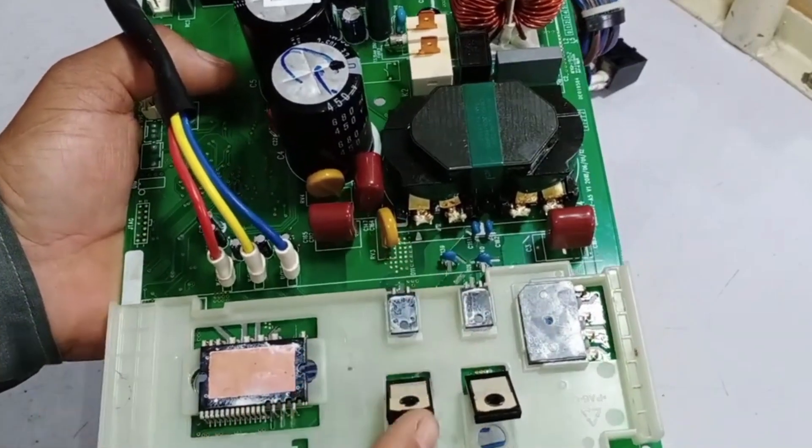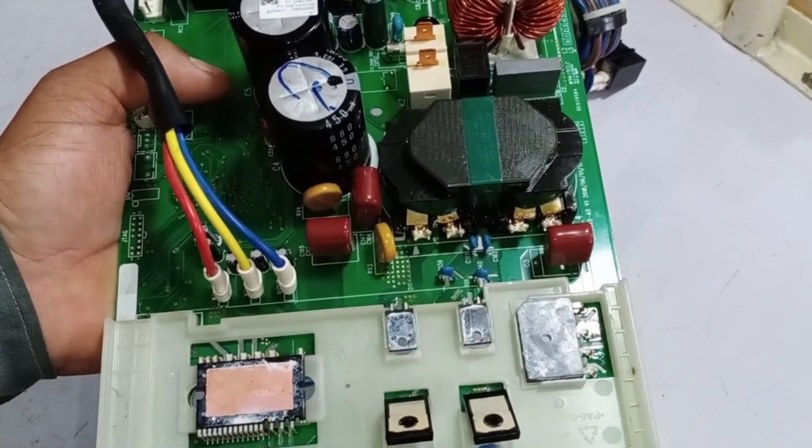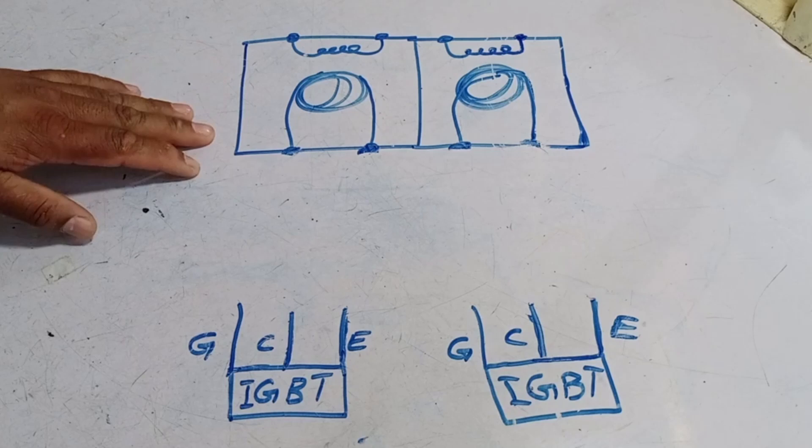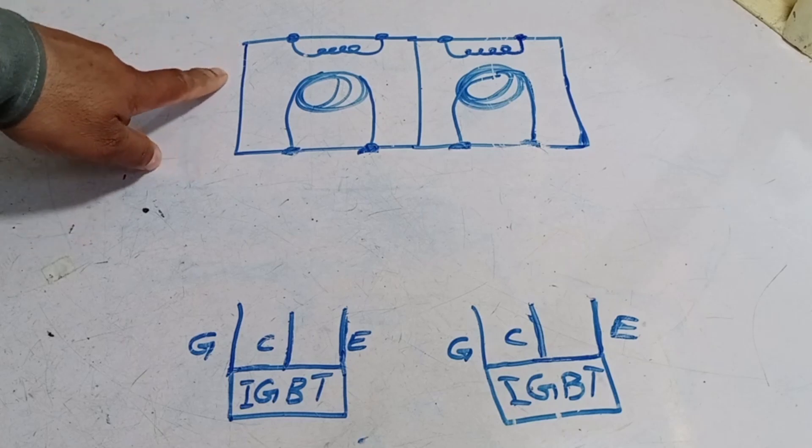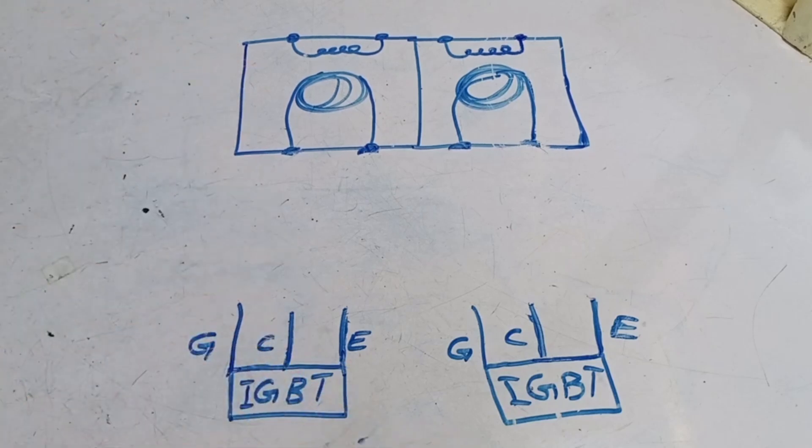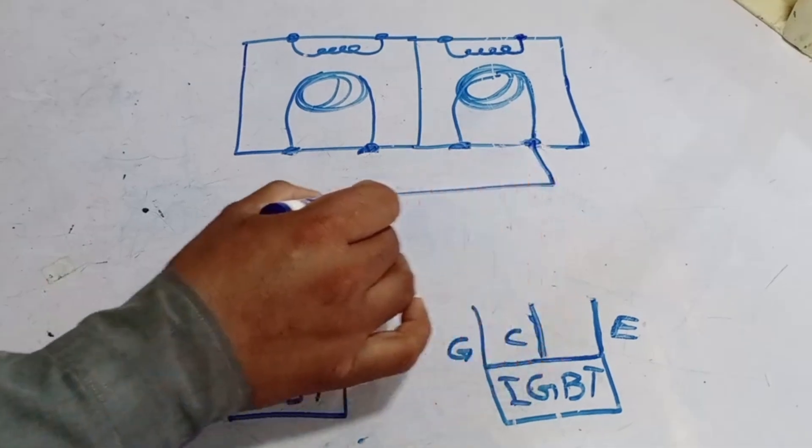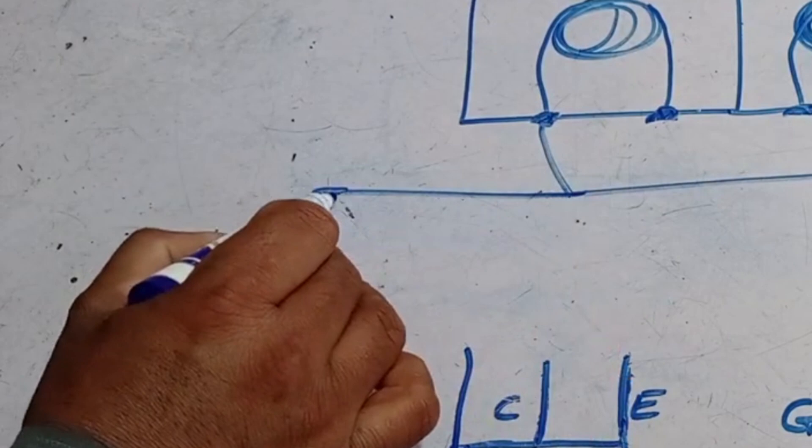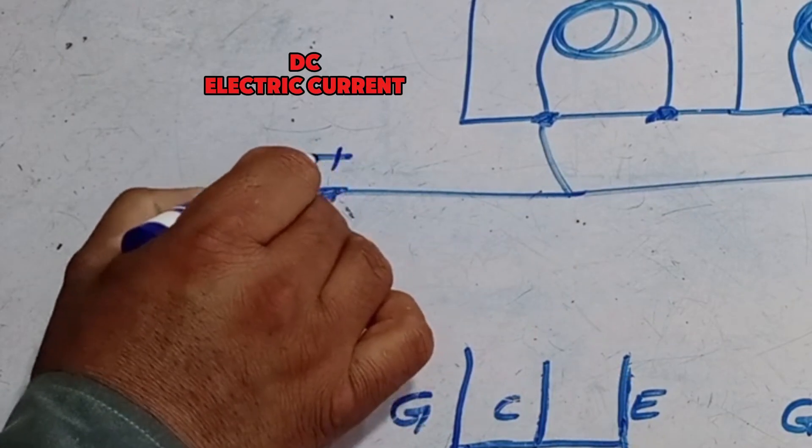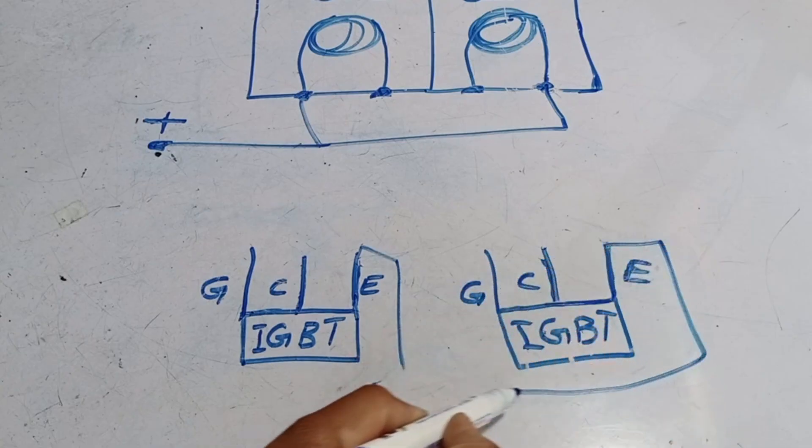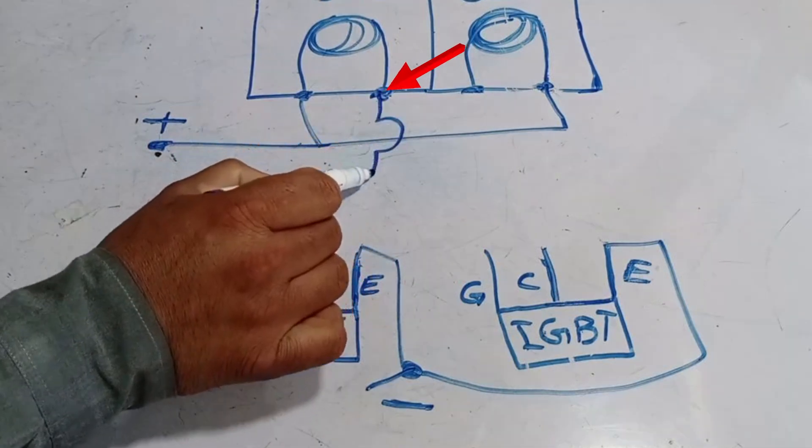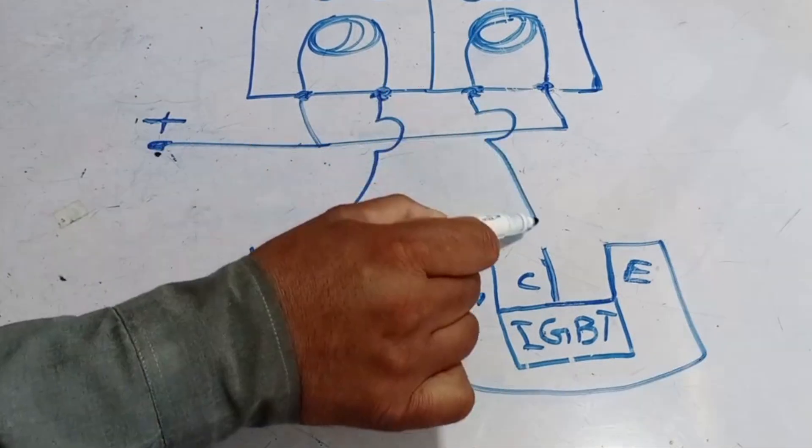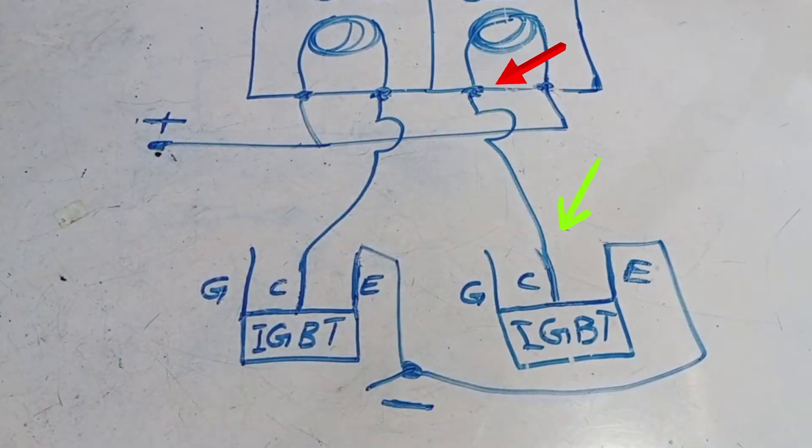To better understand this, I will create a diagram and explain how it works. Now I have created the diagram. As you can see, the reactor is placed at the top, and the two IGBTs are at the bottom. Here, this point and this point are connected in series, and a positive line is present. The DC electric current is coming to this point. Now, in the IGBT, the negative points are present on both emitters. This point is connected to the collector, and the second point is also attached to the collector.